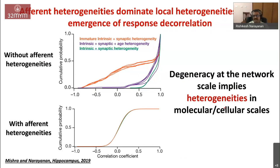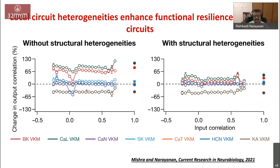Different networks could use different combinations of molecular and cellular parameters to achieve the same amount of decorrelation — leading to degeneracy. What she showed was that perturbing the system by virtually knocking out ion channels one by one had a large impact when there were no structural heterogeneities. But when structural heterogeneities were present, there was a certain amount of robustness: the range of perturbation effects was smaller with heterogeneities than without them. This was an example where heterogeneities form the substrate for decorrelation and robustness in this circuit.